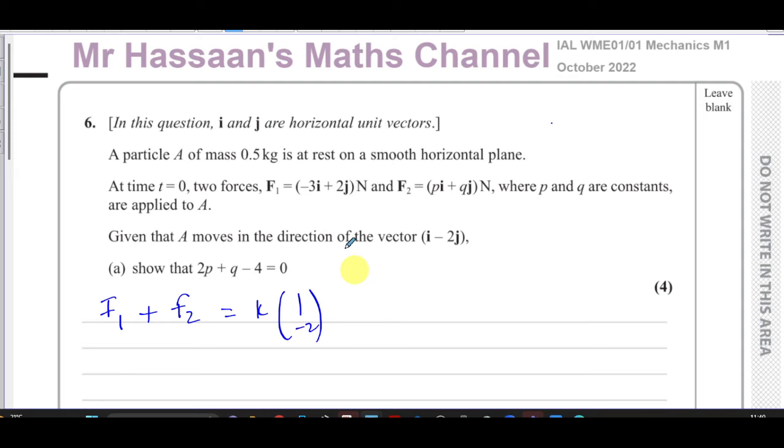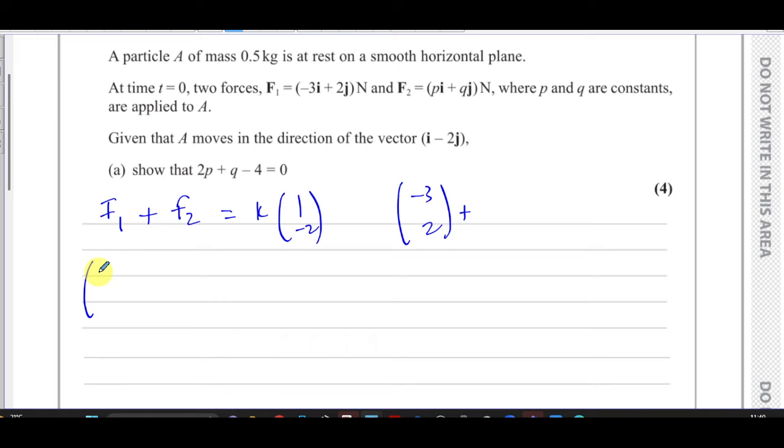What we can say from this is F1 which is minus 3, 2 plus F2 which is p, q, which we don't know the values of, is equal to k times 1 minus 2.